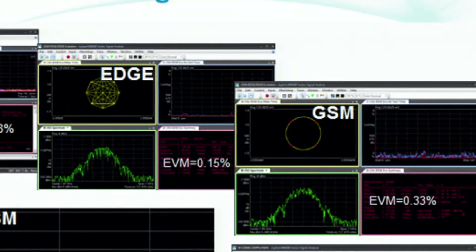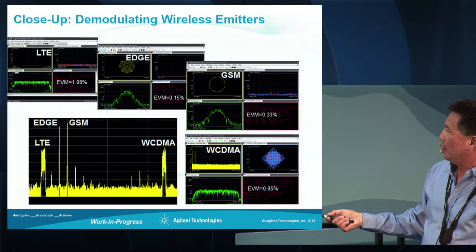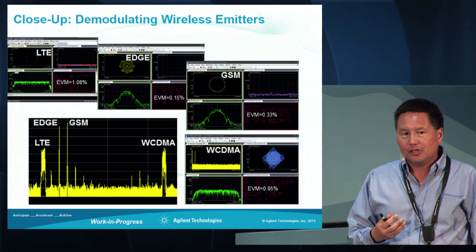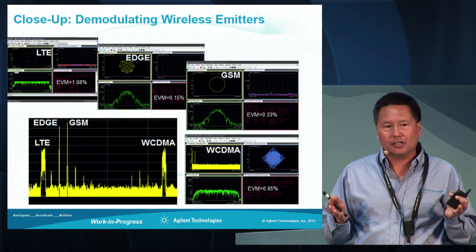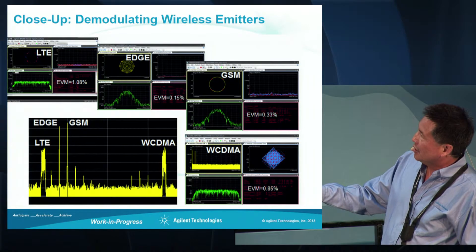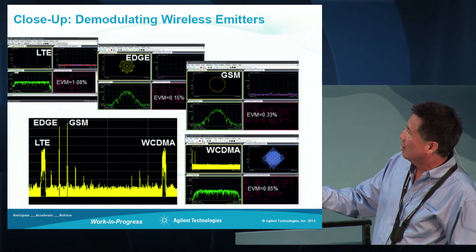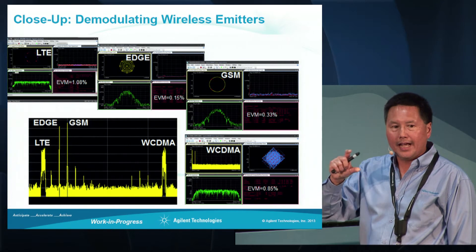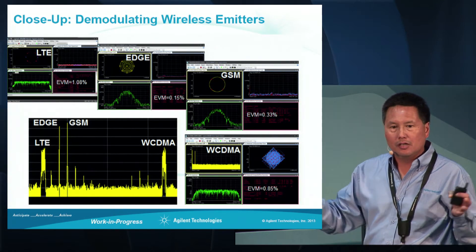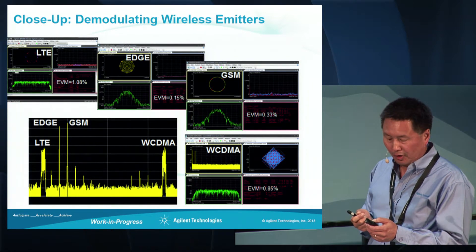Here's GSM with an EVM of about 0.33% and WCDMA with an EVM of about 0.85%. If you're a radar engineer, you may not be particularly interested in demodulating signals. But we show this because it demonstrates the signal fidelity achievable with this AWG — it's a precision AWG. Error vector magnitude is a measure of the error a transmitter might introduce, and the EVMs for LTE, EDGE, GSM, and WCDMA are fairly low even though we have a spectrum with multiple wireless and radar signals combined.